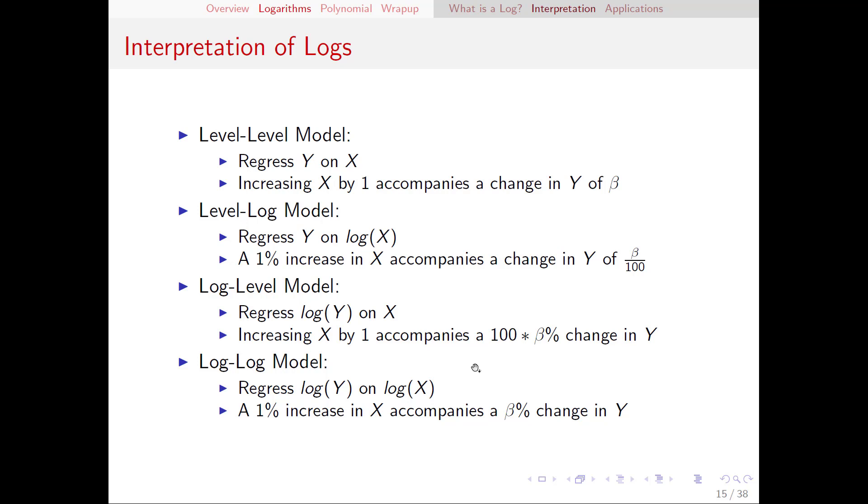Finally what happens when we have a log of both y and x then we have the log log model. Here we have logs on both variables so we have percentage change interpretations on both. So one percent increase in x accompanies a beta percent change in y. We do not have to multiply or divide anything by 100 because we're in percents on both sides.